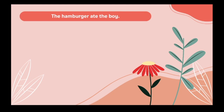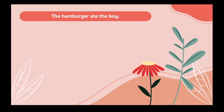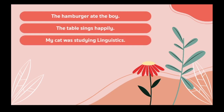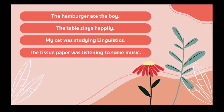Or let's consider other sentences like: 'The table sings happily,' 'My cat was studying linguistics,' or 'The teacher paper was listening to some music.' You might notice that these sentences are all syntactically correct — that is to say, they are all grammatical. But if you look at the meaning of them, these sentences are all semantically odd, which means the meaning is weird and makes no sense.